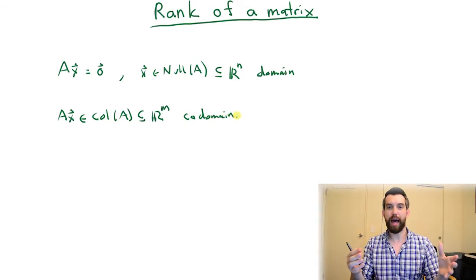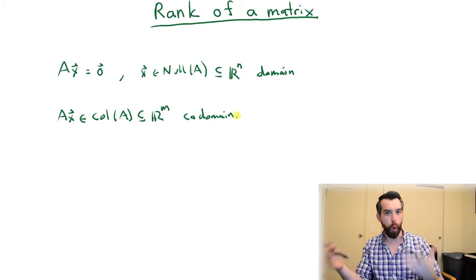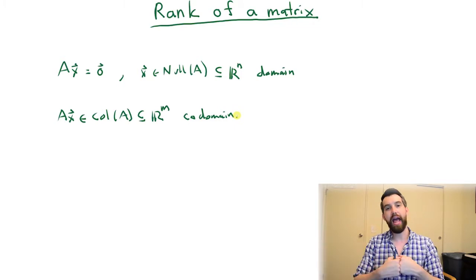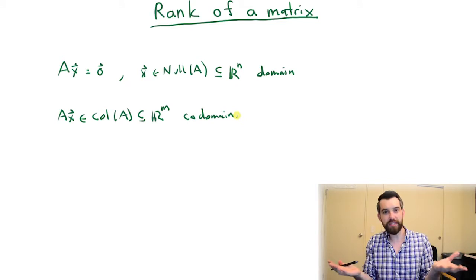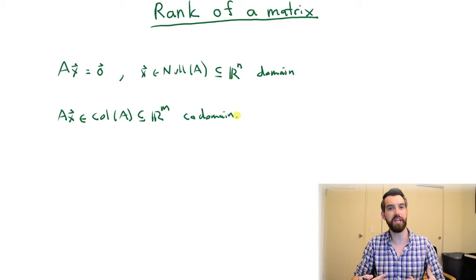These two different ideas, the null space, which is one subspace of the domain, and the column space, which is a subset of the codomain, are in some sense connected. What we want to explore in this video is that connection, but a little bit deeper.